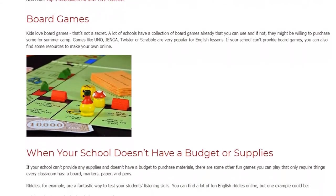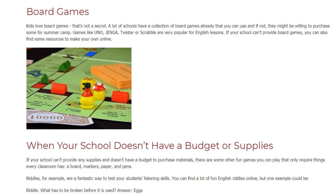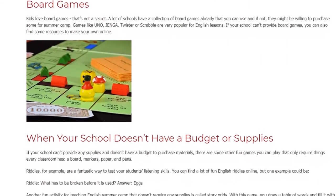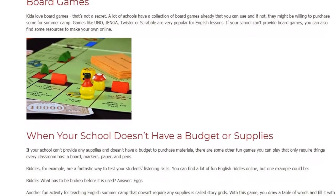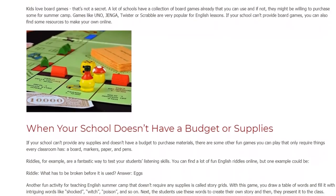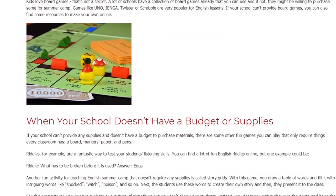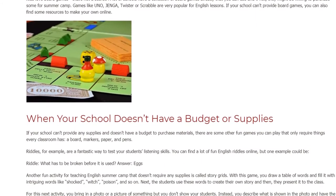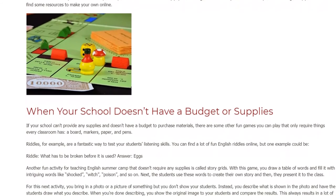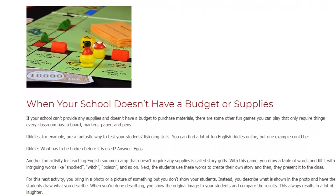Another fun activity for teaching English summer camp that doesn't require any supplies is called Story Grids. With this game, you draw a table of words and fill it with intriguing words like 'shocked,' 'witch,' 'poison,' and so on. Next, the students use these words to create their own story and then present it to the class.